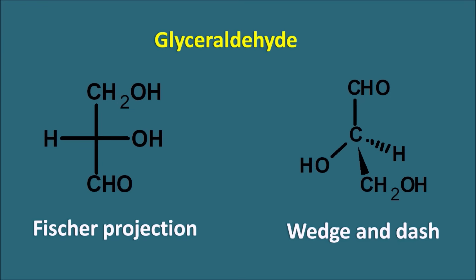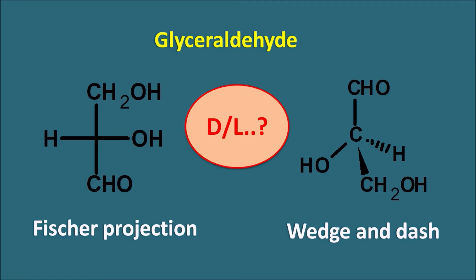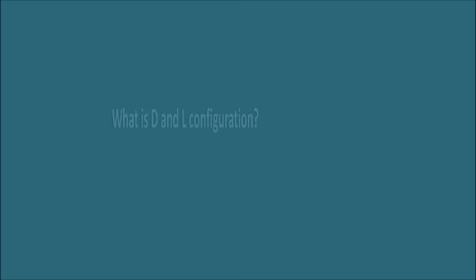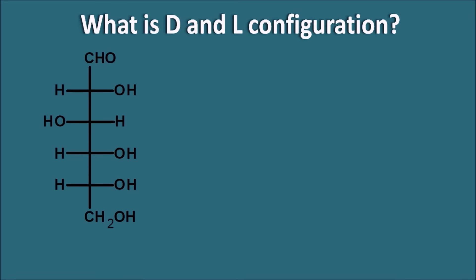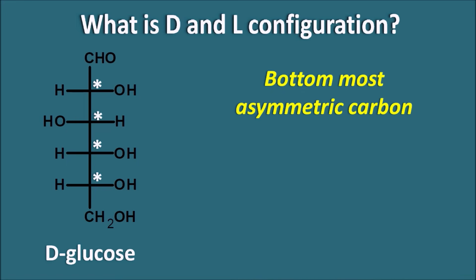Now, whether these structures have either D configuration or L configuration — in order to determine this, let us first see what D and L configuration means. Suppose we have a structure like D-glucose. Here we are given the configuration as a D isomer. How can we assign D configuration? We can give the configuration based on the asymmetric carbon. In glucose we can observe four types of asymmetric centers. In order to assign D and L configuration, we have to consider the bottom-most asymmetric carbon.